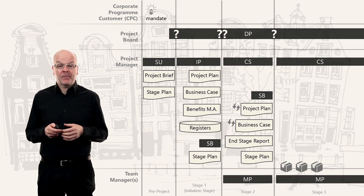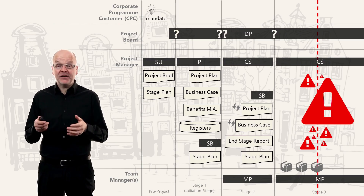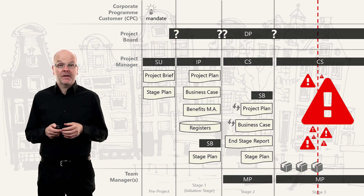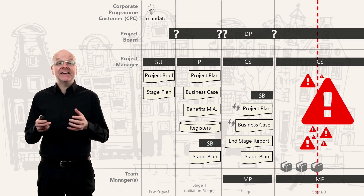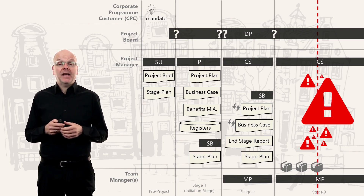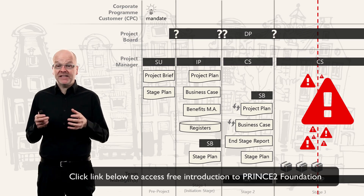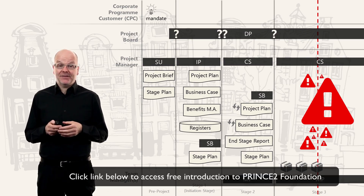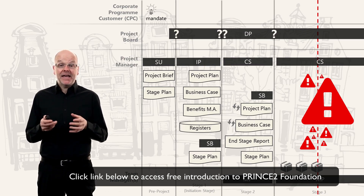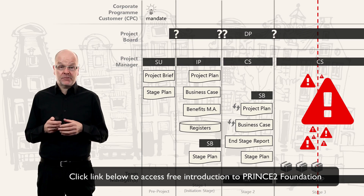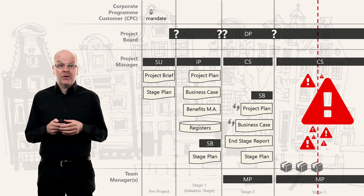But what happens if the project manager hits a big problem? Let's say that product X was supposed to take 10 days and now we find out during the stage that it's going to take 30 days. This is a big issue and it can put the stage into real trouble or danger.